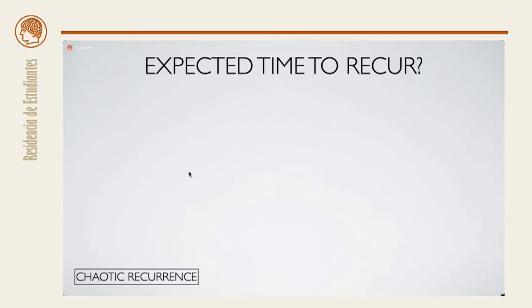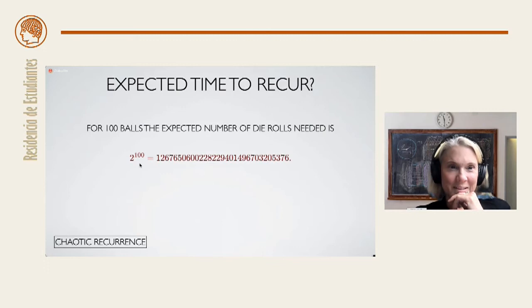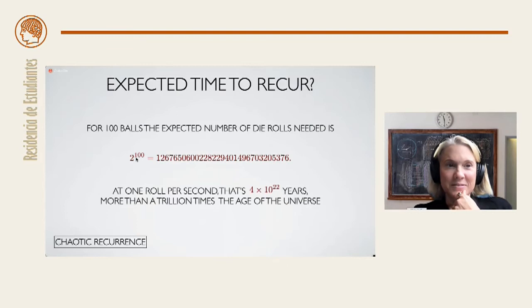In fact, we can calculate the expected time for this system to recur. So, remember, when we had two balls, it took four iterates. We expect four iterates. What about in this situation? For this situation, with 100 balls, 50 in each chamber, the expected number of die rolls needed is 2 to the 100th. So, how long would that take? Well, suppose we were very fast and we could do one roll per second. That's four times 10 to the 22 years. So, that's more than a trillion times the age of the universe. So, this is not a game you should try at home. And you probably wouldn't want to make a bet on this happening. Well, you definitely wouldn't want to make a bet on this happening in your lifetime.